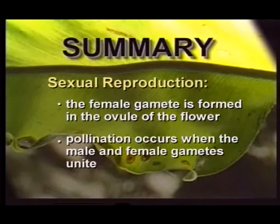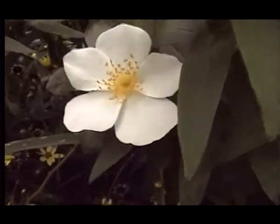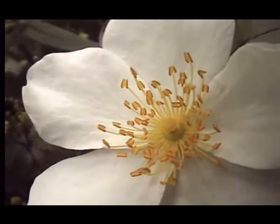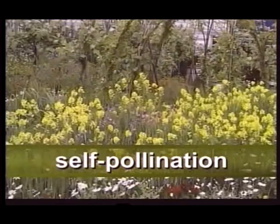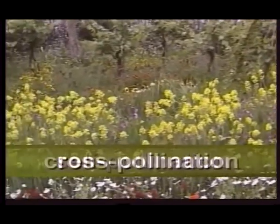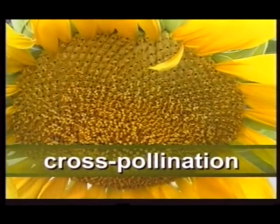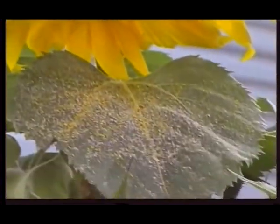Pollination occurs when the male and female gametes unite. For reproduction to take place, pollen must be transported from an anther to a stigma. It can occur within one plant, which is known as self-pollination, or it can occur between plants, which is called cross-pollination. There are many mechanisms for carrying pollen from one flower to another for cross-pollination.